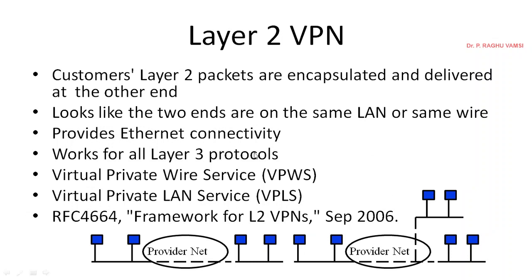Layer 2 VPN provides Ethernet connectivity and works for all Layer 3 protocols. Other features include virtual private wire services and virtual private LAN services. Layer 2 VPN was defined under RFC 4664, the framework for L2 VPNs, published in September 2006 by the IETF.